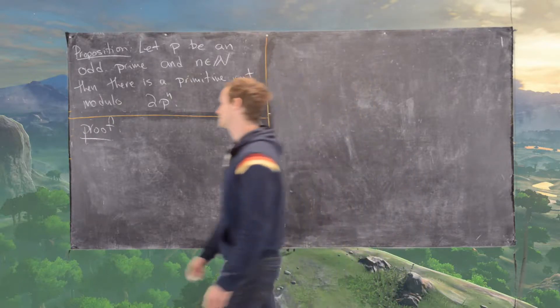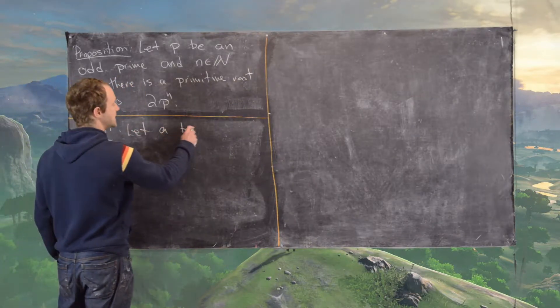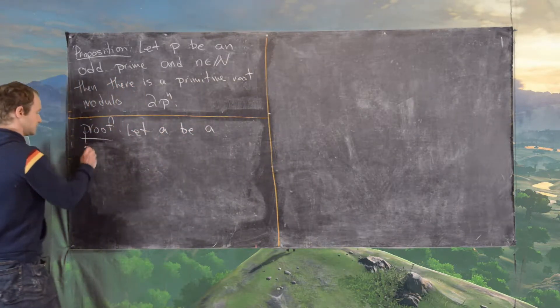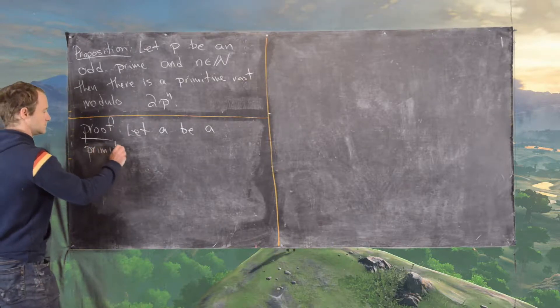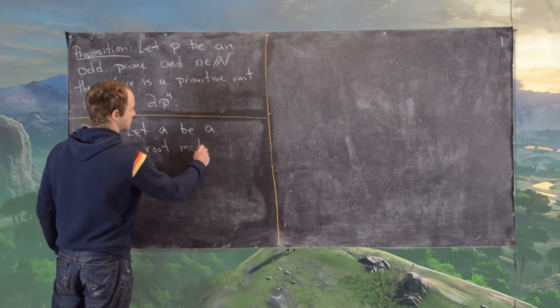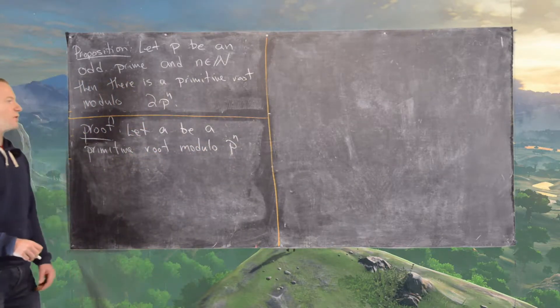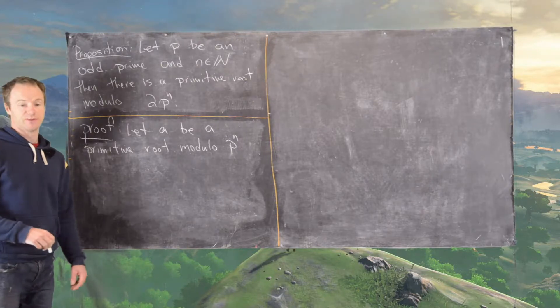Let's get going with the proof. Let a be a primitive root modulo p^n. By a previous result we know we can pick a primitive root modulo p^n.